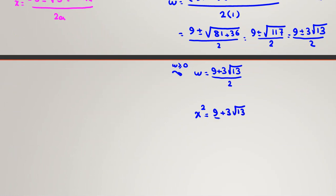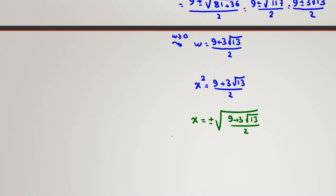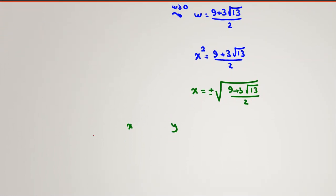Since x squared equals (9 + 3√13) / 2, we get x equals plus or minus the square root of (9 + 3√13) / 2. So there are two values of x: one will be positive — the square root of (9 + 3√13) / 2 — and the other will be its negative.